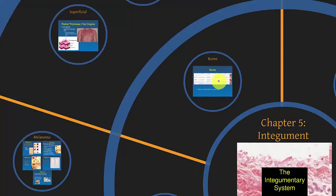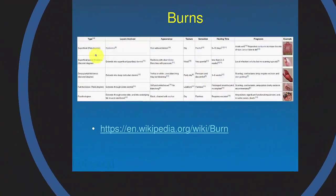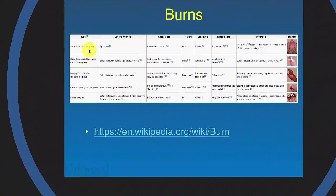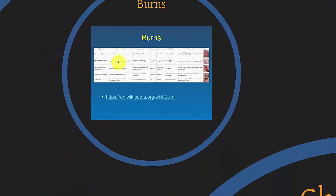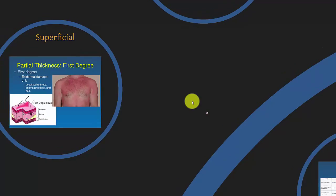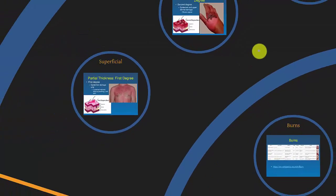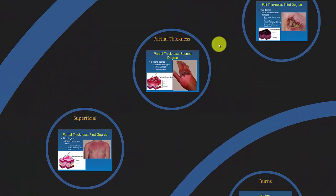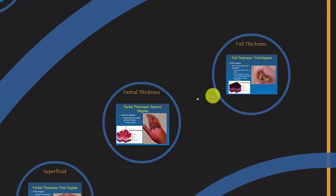And then we'll get into burns, which gets pretty complex because there are a lot of different classification systems. The two main classification systems are superficial to full thickness, or first, second, third, and fourth degree. We're going to put those together into an amalgam: superficial, partial thickness, and full thickness.